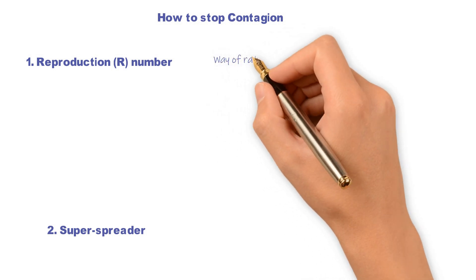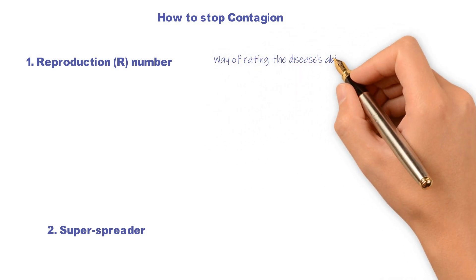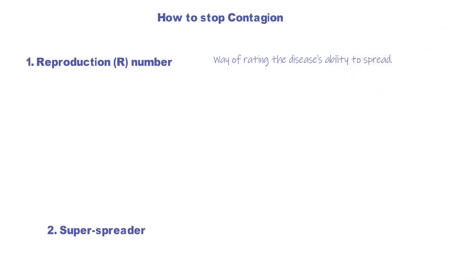The R number is a way of rating a disease's ability to spread. R is the number of people that one infected person will pass a virus to on average. For example, measles has an R number of 15 in a population without immunity, meaning one person will spread measles to 15 others on average.